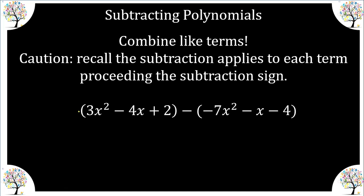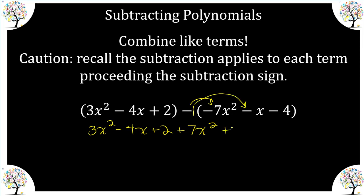The number out front of this parentheses is an understood one. However, in front of this polynomial it's minus, so it's like an understood negative one. Here I'm going to distribute the understood one, and then distribute the negative one to each of these terms. That gives me positive seven x squared, positive one x, and positive four.